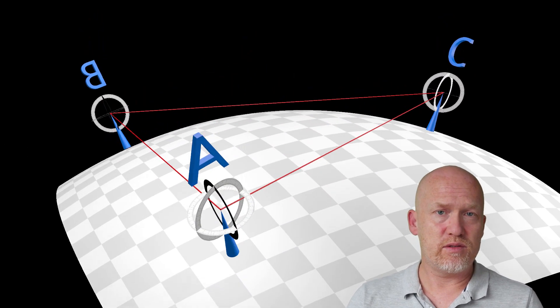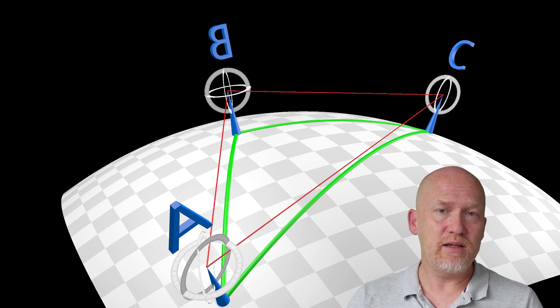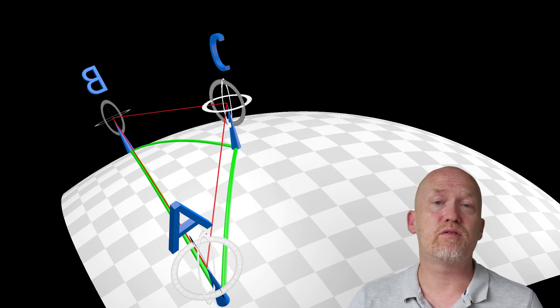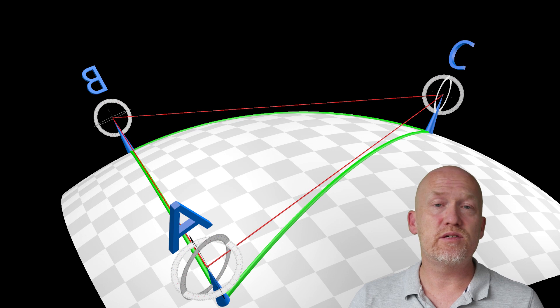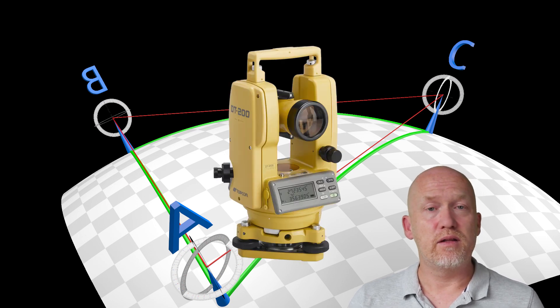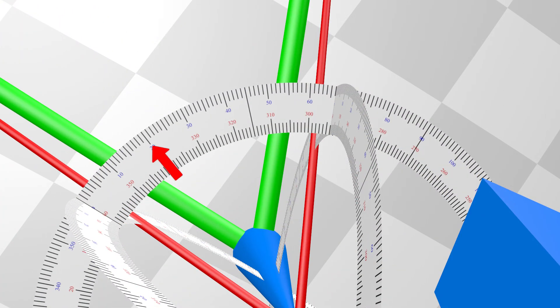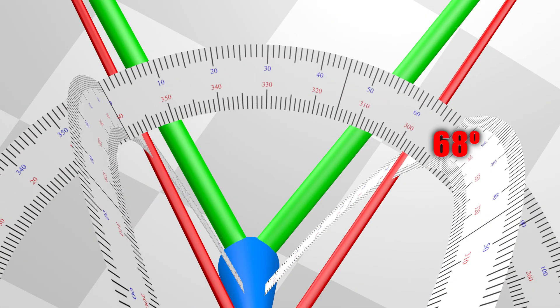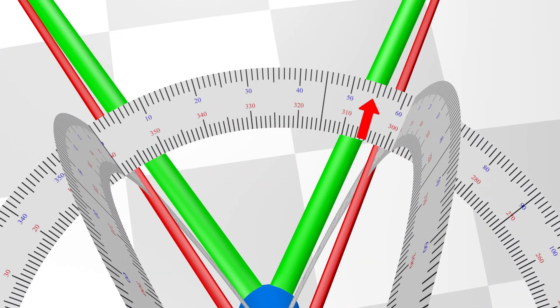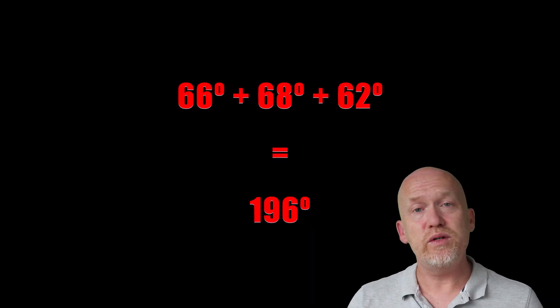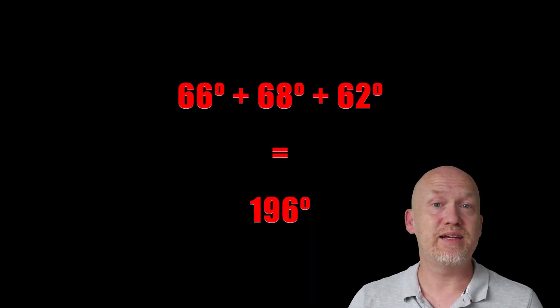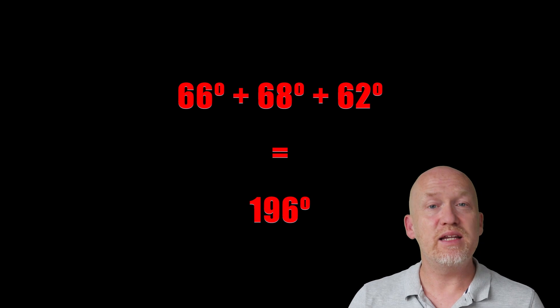It's important to notice that the protractors stay level to the ground, and they can only pivot horizontally and vertically, just like theodolites. Let's read off the angles again. When we add these angles together, we see that it exceeds 180 degrees.